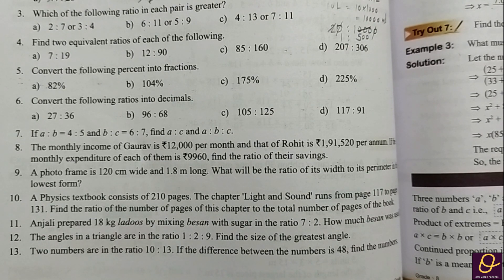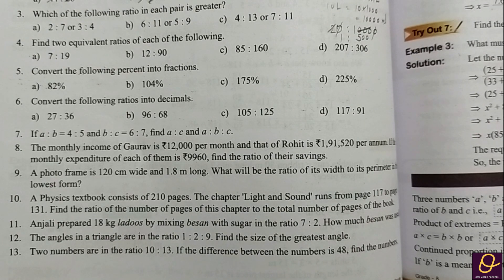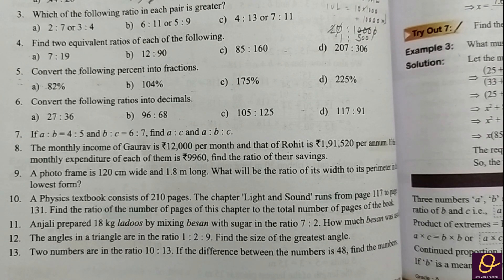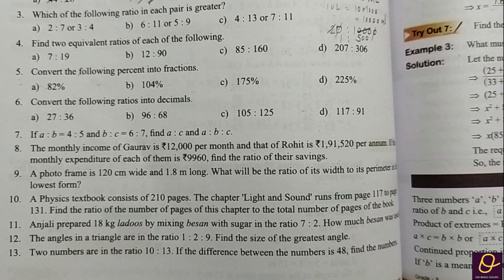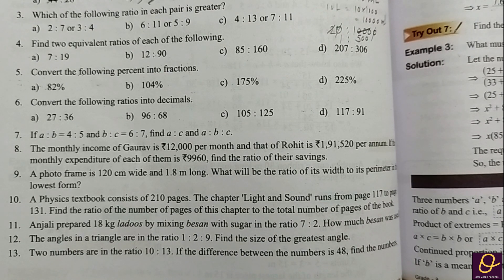The angles in a triangle are in the ratio 1:2:9. Find the size of the greatest angle. We need to find the greatest angle; the angles of the triangle are given in ratio form. We know that the sum of all angles of a triangle is equal to 180 degrees.